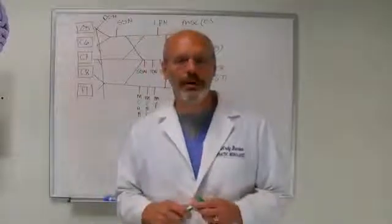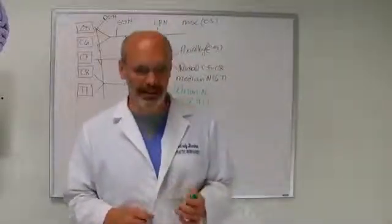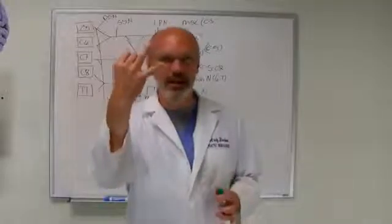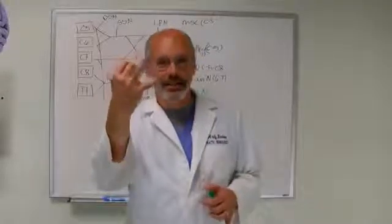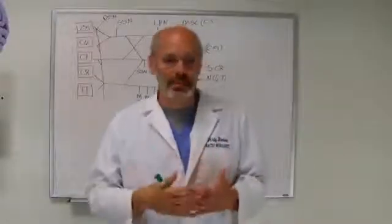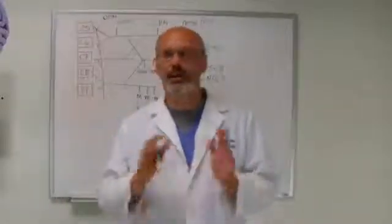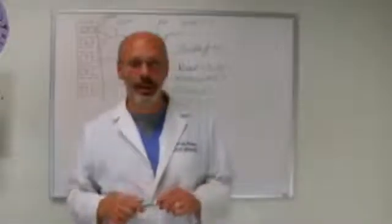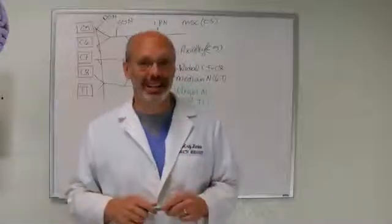Now, today what we're going to be talking about is ulnar neuritis. And what this means is we've got numbness or tingling in these two digits, in the little finger and the ring finger. When we're dealing with any type of numbness, whether it be in the hand or foot, no matter what neurological sign that we have, we need to start with the neurokinetic chain.